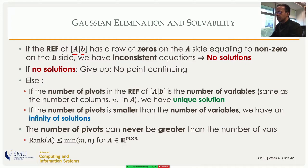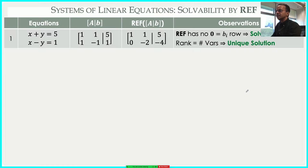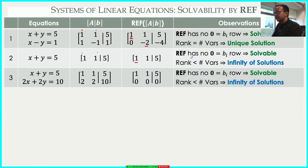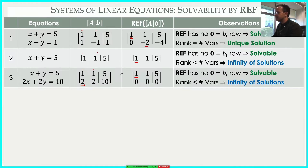In the first example — a consistent, independent set of equations — the augmented matrix gives a REF with no zero-equals-nonzero row, two pivots, and two unknowns, so rank equals number of unknowns: unique solution. In the second example with only one equation, the matrix is already in REF, there is no inconsistency, but there is only one pivot for two unknowns — rank less than number of variables — so infinitely many solutions. A third case with two redundant equations also produces a zero row without inconsistency, one pivot, two unknowns: infinitely many solutions.